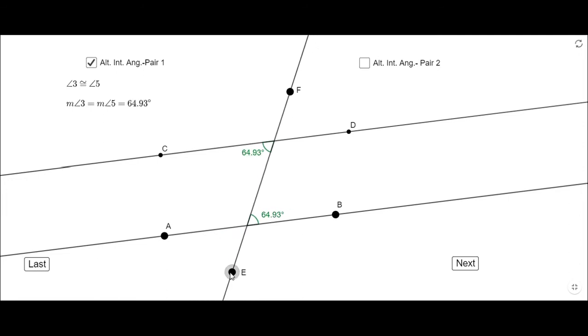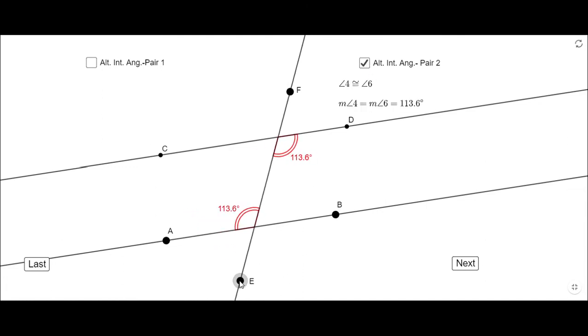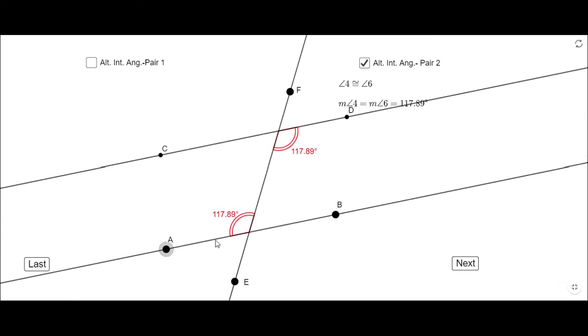But we have another set of angles that are alternating interior, angle 4 and 6. You notice also they are congruent, they have the same measure wherever I move these parallel lines and the transversal. I'm going to click on the Next button.